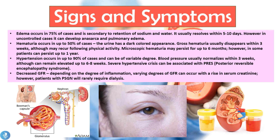Looking at the signs and symptoms: because we have inflammation in the glomerular and nephron network, we have a decreased ability to concentrate and eliminate fluid, leading to edema. Edema actually occurs in 75% of cases and is secondary to the retention of sodium and water. It usually resolves within 5 to 10 days; however, in uncontrolled cases it can develop into anasarca — a more severe and generalized edema — as well as pulmonary edema.